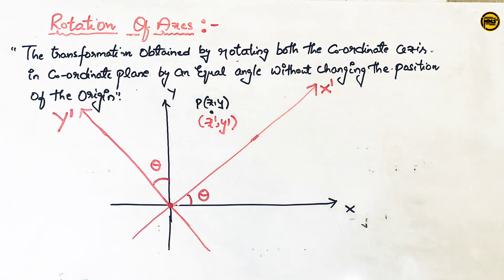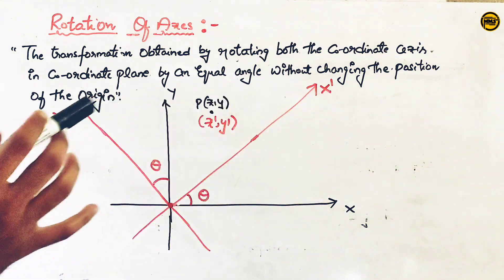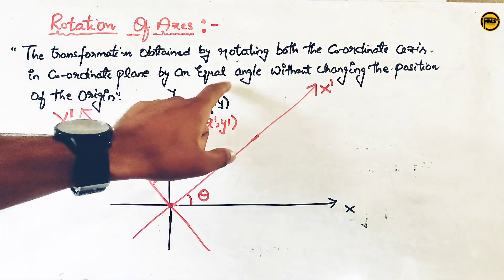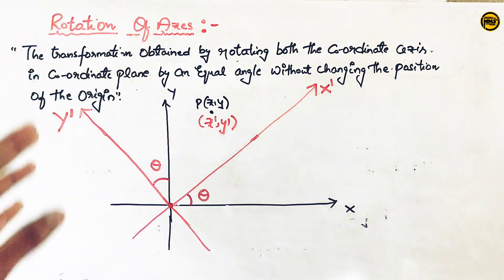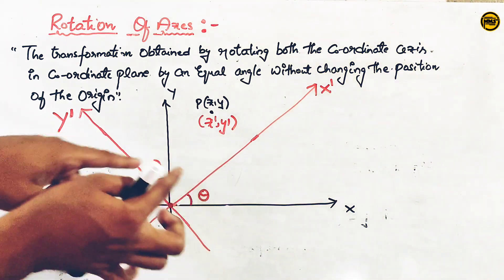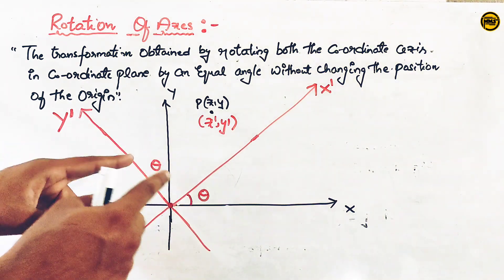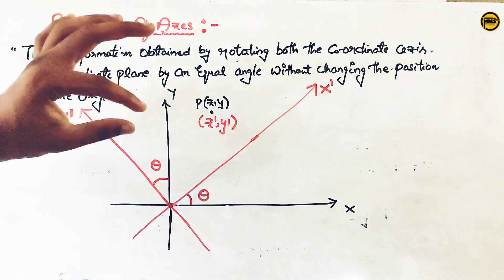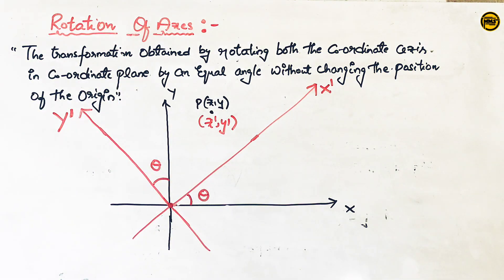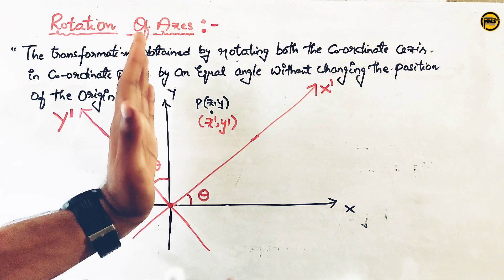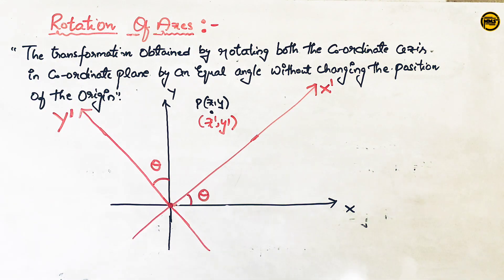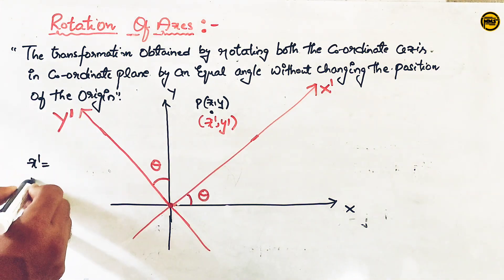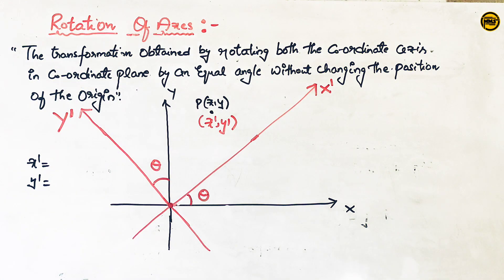This rotation is an equal angle theta on both axes. The angle of rotation on the x-axis and y-axis is the same angle theta. In the original system, we have point coordinates (x, y), and in the new rotated system we want coordinates (x-dash, y-dash). We will find out these values.